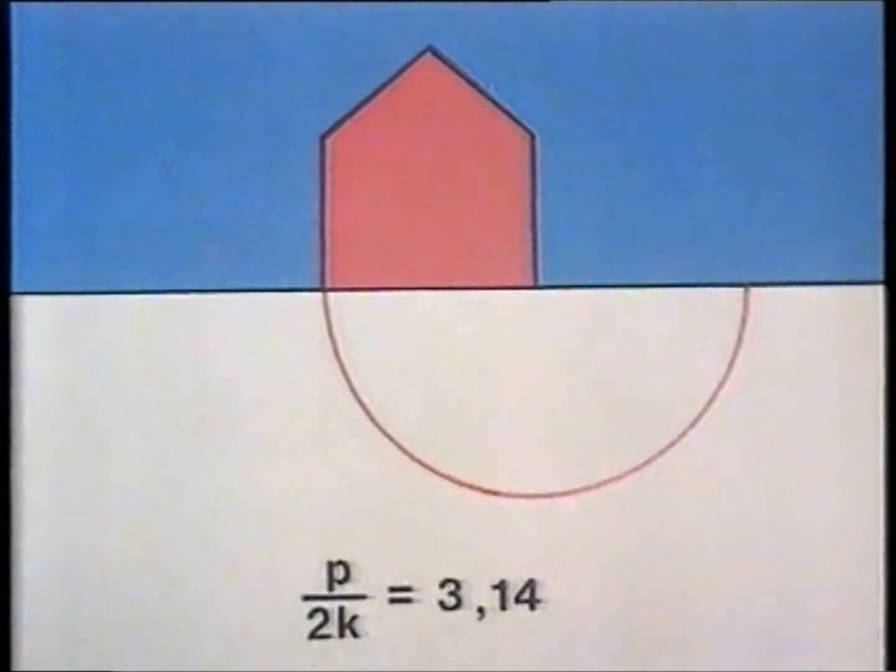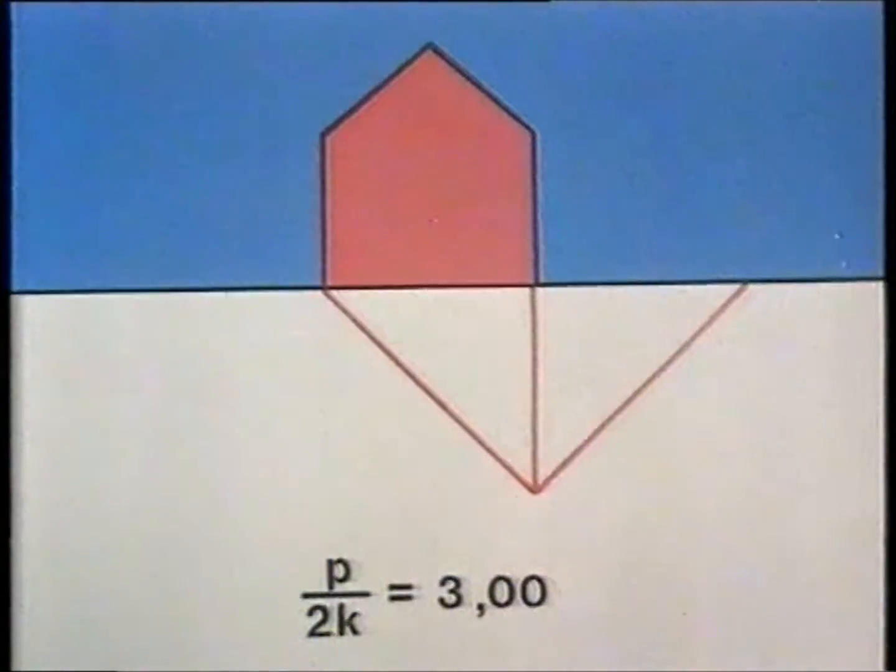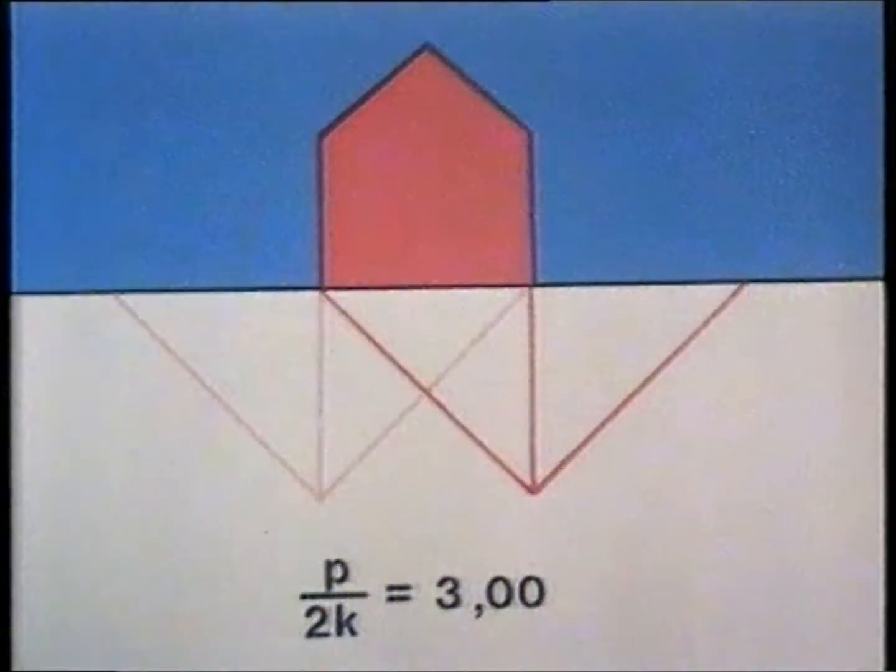Thus the semicircular deformation pattern yields p over 2k equal to 3.14. Let us see how more realistic deformation patterns will influence this value. For this triangular field p over 2k becomes equal to 3.